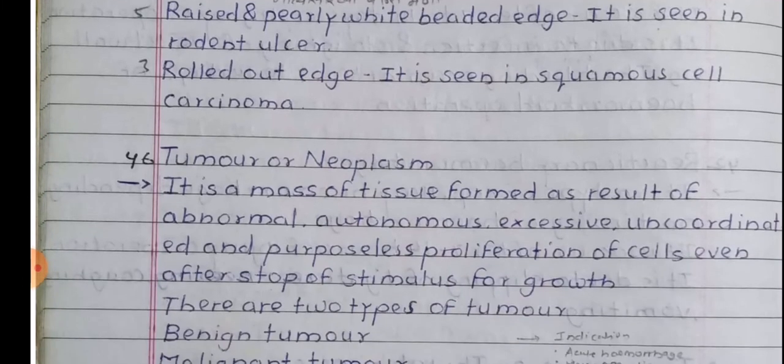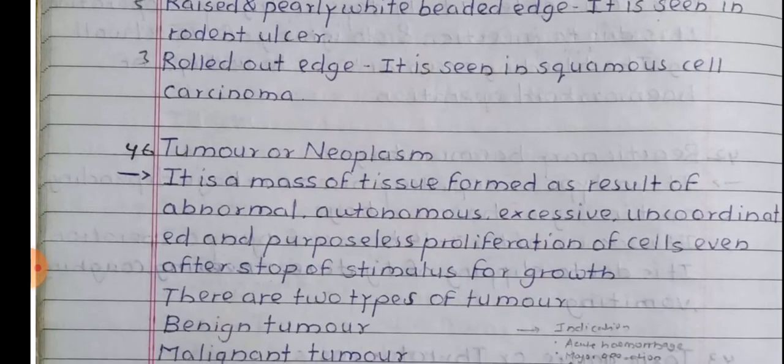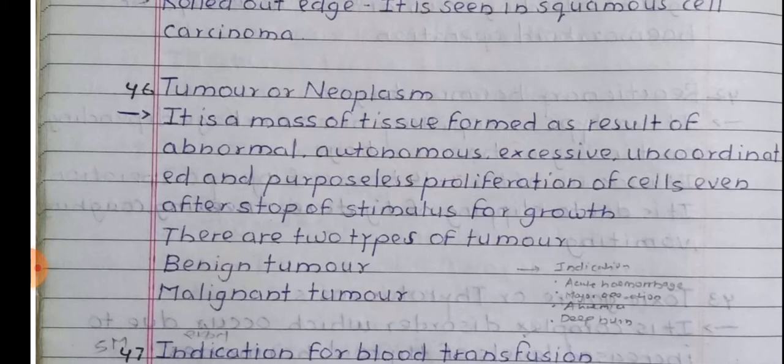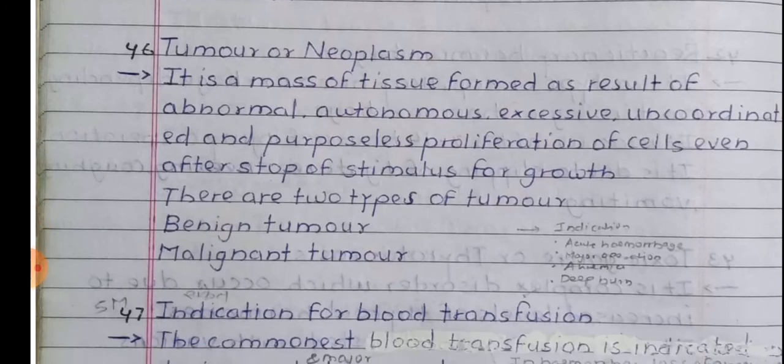Tumour or neoplasm: It is a mass of tissue formed as a result of abnormal, autonomous, excessive, uncoordinated, and purposeless proliferation of cells even after the cessation of the stimulus for growth. There are two types of tumour: benign tumour and malignant tumour.